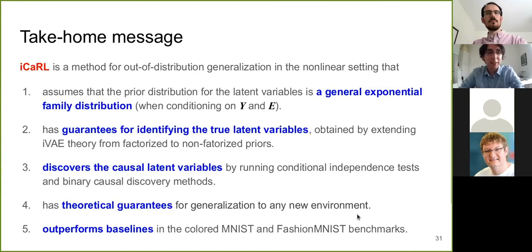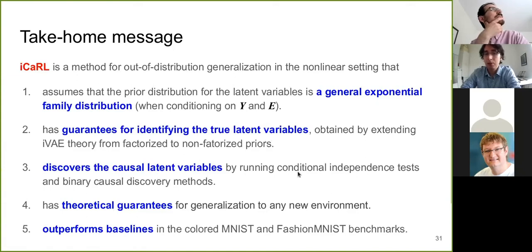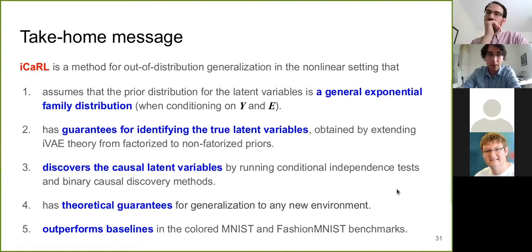ICAL is a method for out-of-distribution generalization in the non-linear setting. We assume that the prior distribution for the latent variables, given label and environment, is a general exponential family distribution — this guarantees identification of the true latent variables. We extended the iVAE theory from factorized to non-factorized priors. We discover causal latent variables by doing conditional independence tests, and we have theoretical guarantees for generalization to new environments. We have shown we can outperform existing baselines on Colored MNIST and Fashion MNIST.